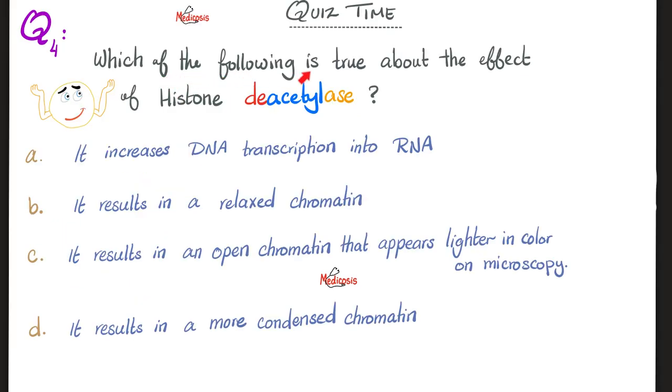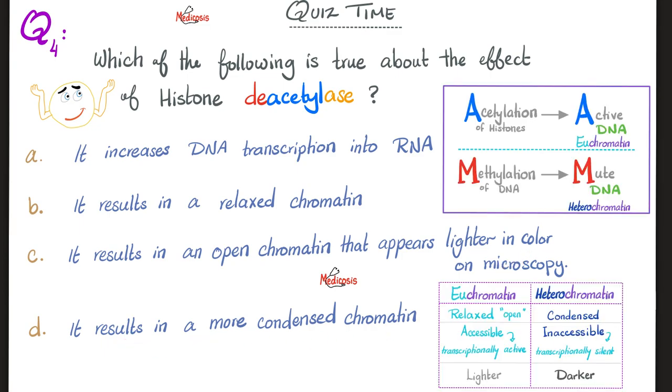Next, question number 4. Which of the following is true about the effect of histone deacetylase? Is it increased DNA transcription into RNA, result in a relaxed chromatin, results in an open chromatin that appears lighter in color, or results in a more condensed chromatin? Please pause. Recall that acetylation makes my DNA active for transcription. How about methylation? Mutes my DNA. Mutes transcription. Next, the difference between euchromatin and heterochromatin. Eu is relaxed and open to you, so that it's accessible, so that it's ready for transcription, and it appears lighter because it's relaxed, versus heterochromatin, which is condensed, closed, inaccessible, and it appears darker because it's condensed.